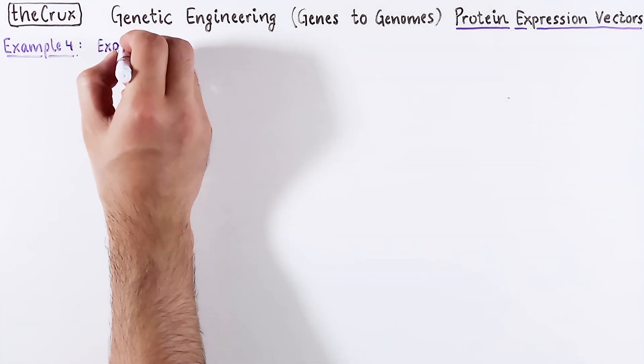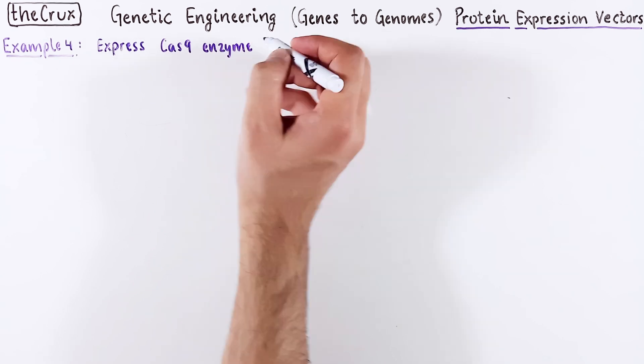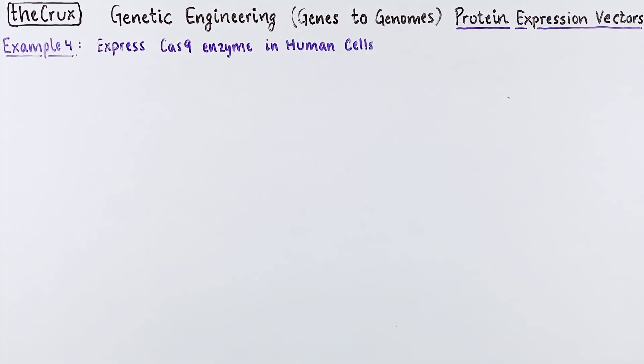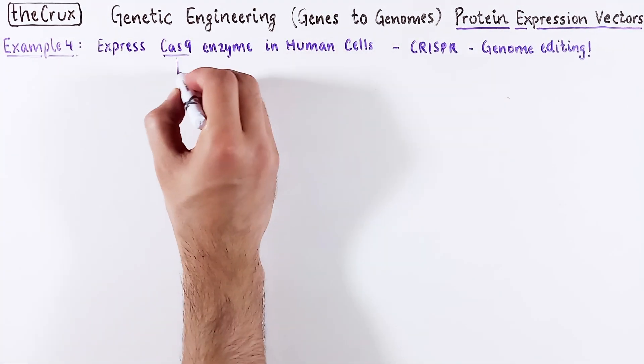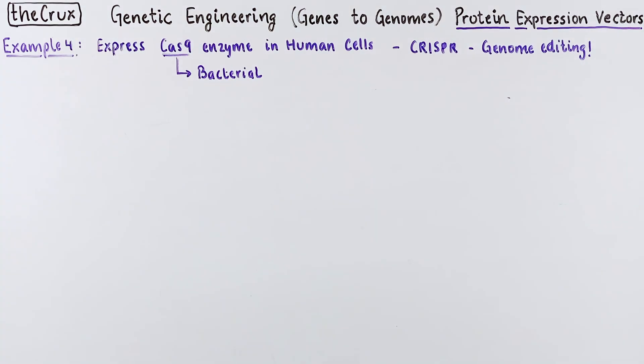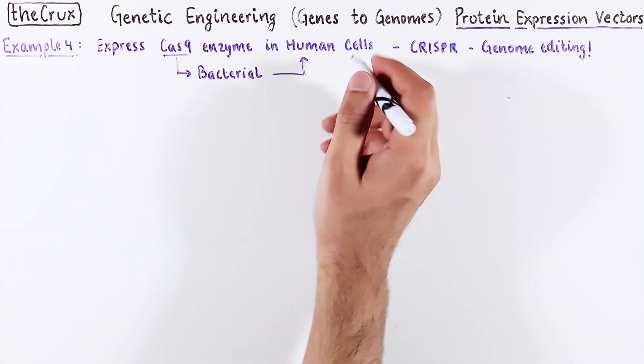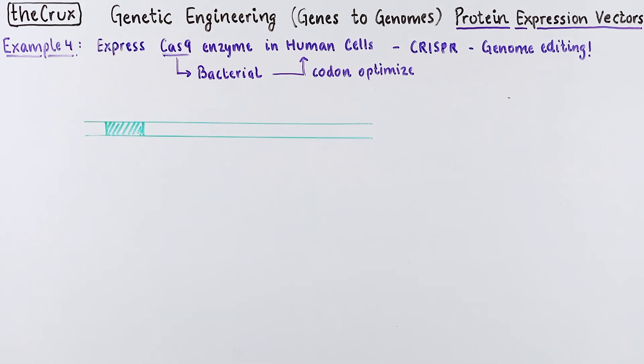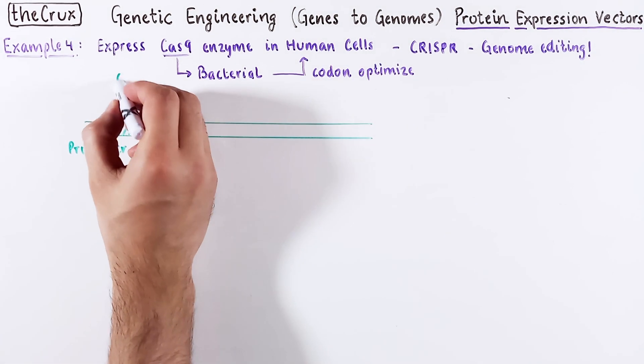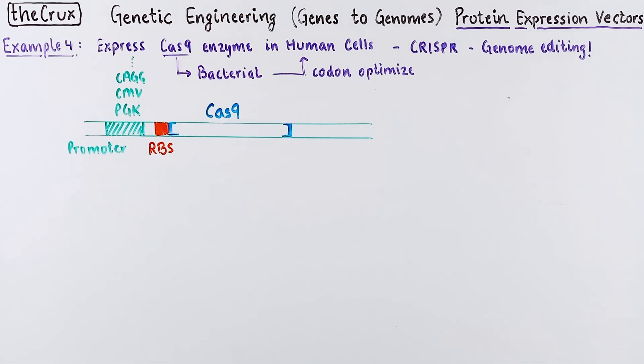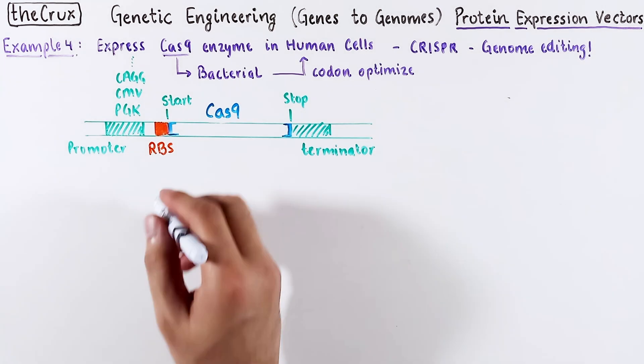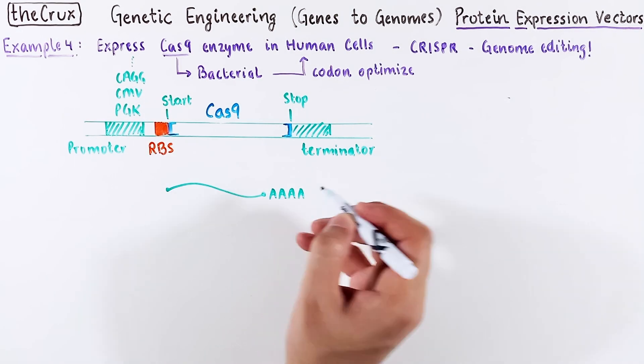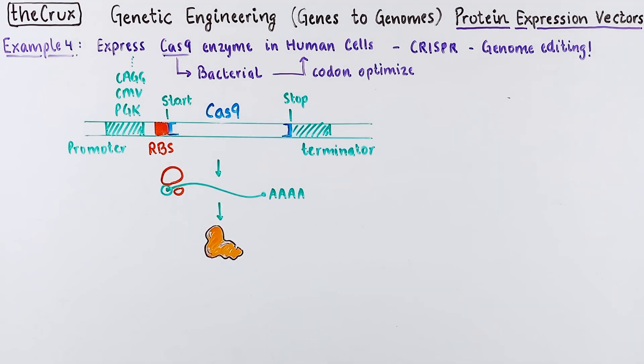Now let's move to a human expression host. First, you want to express the Cas9 enzyme in human cells. The Cas9 is bacteria-derived and not found in humans, so the template needs to be optimized. The vector architecture will look something like this. You need to pick a human-specific promoter, ribosome binding site, and a terminator. Now you can expect to get a Cas9 protein from this vector.